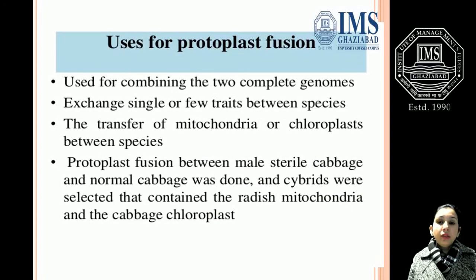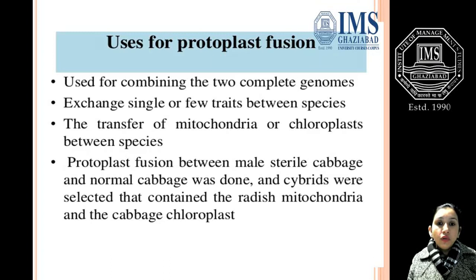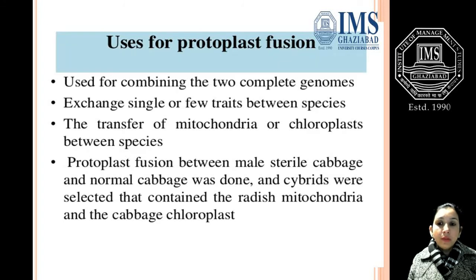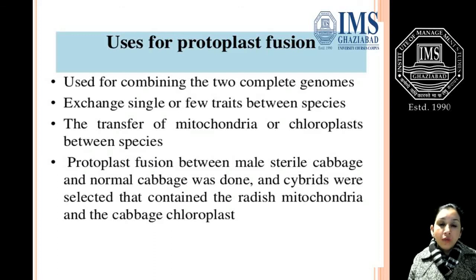Protoplast fusion is used for combining two complete genomes, exchanging single or few traits between species, and transferring mitochondria or chloroplasts between species. For example, protoplast fusion between male sterile cabbage and normal cabbage was performed, and cybrids were selected. Cybrids are cytoplasmic hybrids containing the cytoplasm of both parents but the genome of only one parent — in this case retaining radish mitochondria and cabbage chloroplasts.